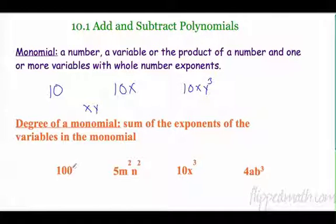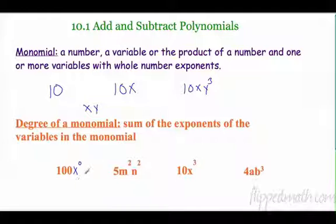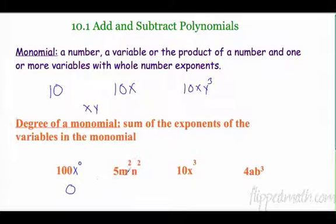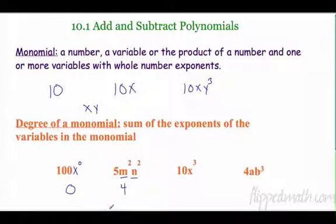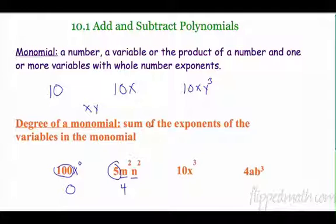Do I have any variable here? No. I could rewrite that as x to the zero, because anything to the zero power is one. So 100 times one — that's x to the zero — so what would be the degree of this? The degree would be zero. The sum of the exponents: here I have two variables, so the sum would be two plus two, which is four. So the degree of this would be four. Don't worry about the numbers, the constants — all that matters is the sum of the exponents of the variables.